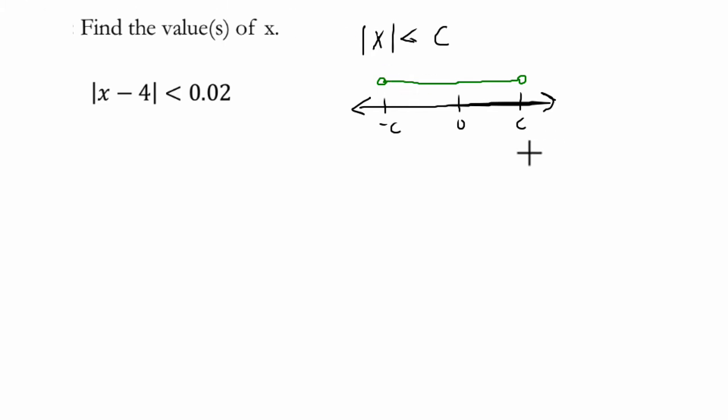As a number example, if we have the absolute value of x is less than 3, well that would just mean that the distance of x is a number whose distance is less than 3 from zero. So here's 3, here's negative 3. x could be any number between negative 3 and positive 3.